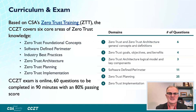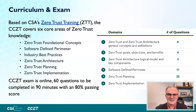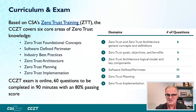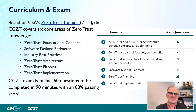The Zero Trust training and certification has a curriculum with six different modules covering: foundational concepts — definitions and understanding from a definitional perspective; software-defined perimeter, one of the earliest Zero Trust-like implementations, referenced heavily in NIST documents; other industry best practices; and architecture, planning, and implementation. If you look at how the exam questions break down, you'll see a preponderance on planning, which really rings true in terms of what organizations need to do.